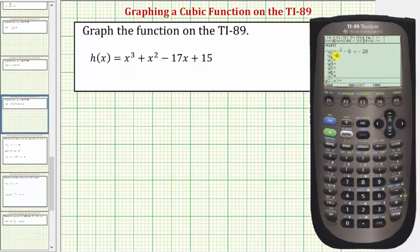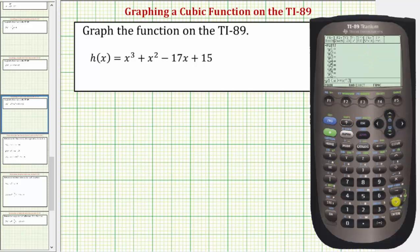Let's enter h of x in y1. We'll press the up arrow, clear this old function, and enter the new function. So we have x raised to the power of three, plus x raised to the power of two, minus 17x plus 15. Let's press enter.